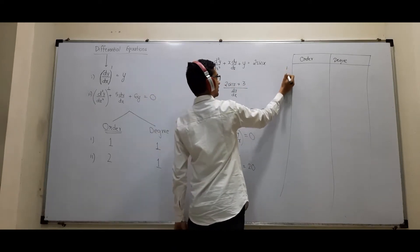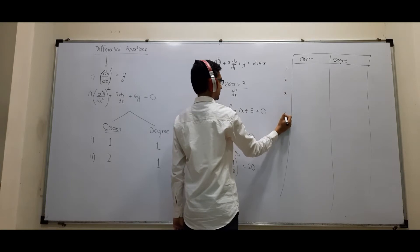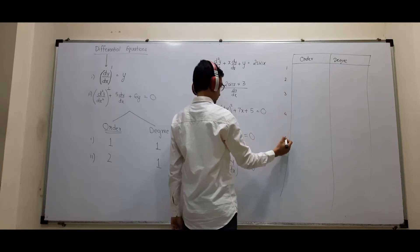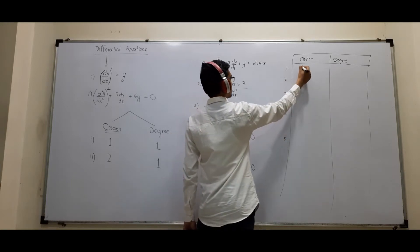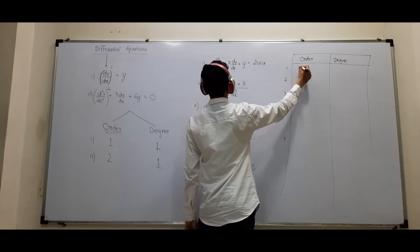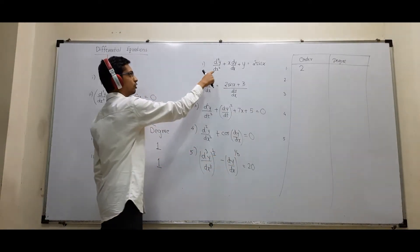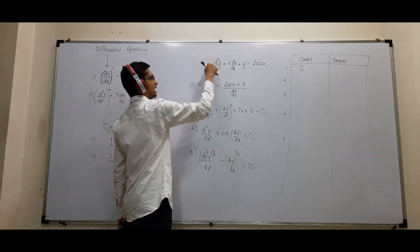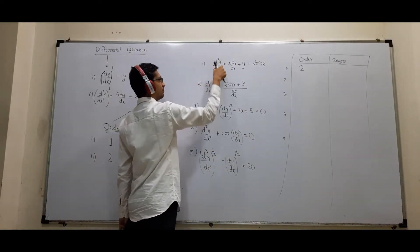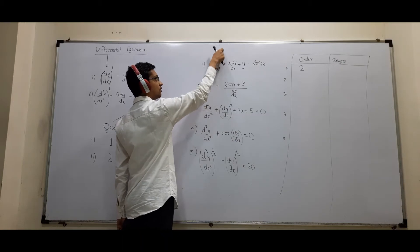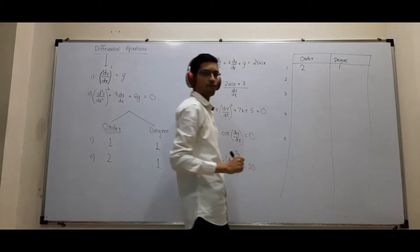In the first problem, we have a first derivative and a second derivative. So the highest derivative gives order = 2. The power of d²y/dx² is 1, so degree = 1.